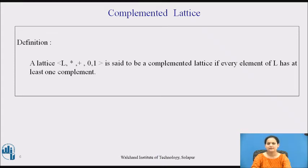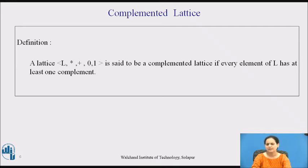For example, for any elements a and b, if a star b equals 0 then b is called a complement of a. Similarly, if a plus b results into 1, then b is termed as a complement of a.